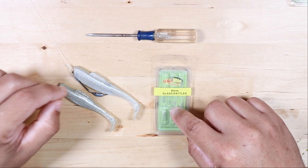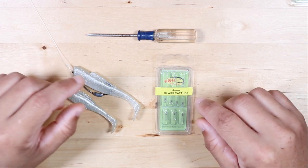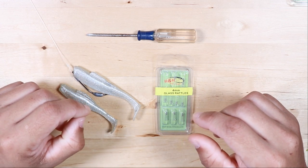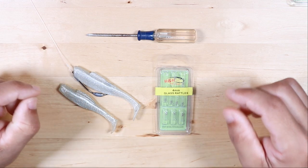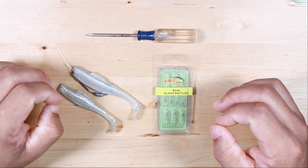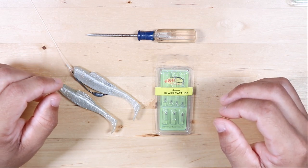That will wrap up this video on adding rattles to your soft plastic lures. If you have any questions or comments about this, please feel free to leave them down below. Also, if you have any additional tips or some experience with this and you would like to share that with us, definitely let us know as well. Until then, thanks for watching and I'll see you on the next video.